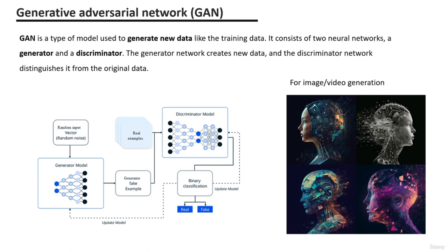As for their use, GANs are commonly utilized in tasks of generating images and videos. These models have shown impressive results in generating realistic images, creating animations, and even generating synthetic human faces. Here we have an example of an image entirely generated using GANs.